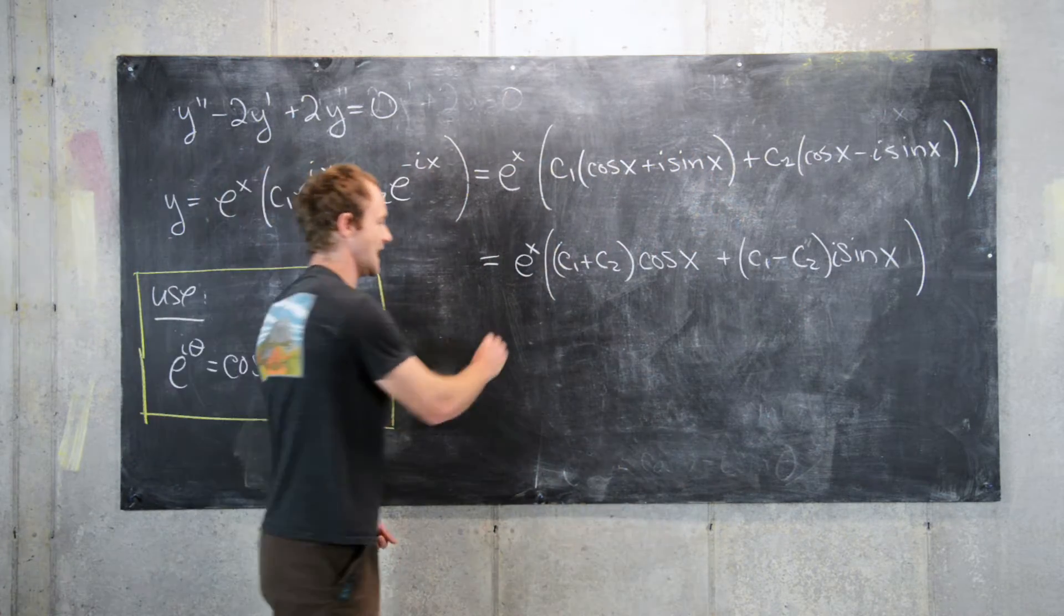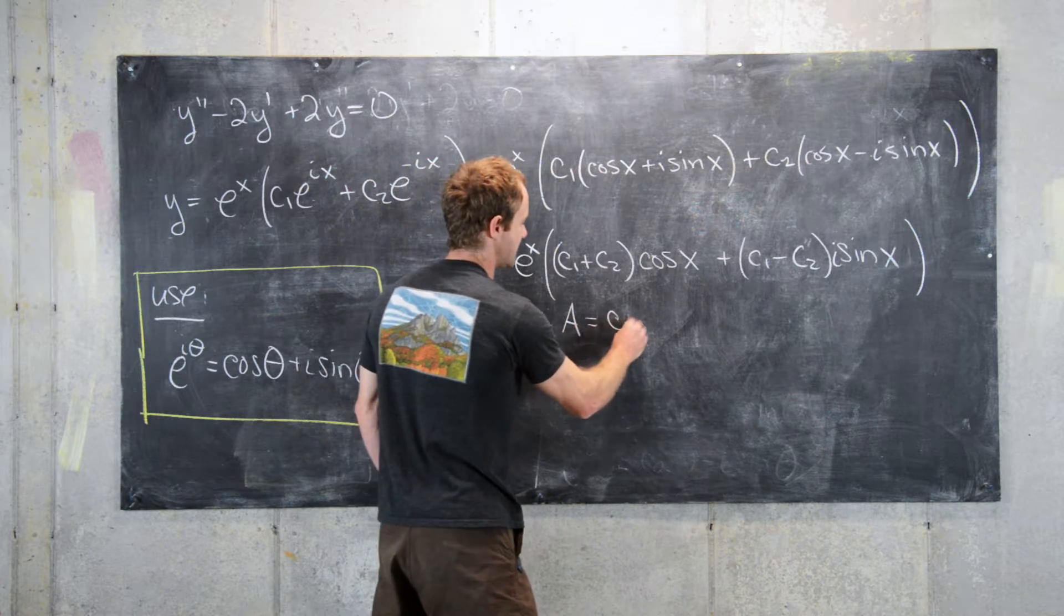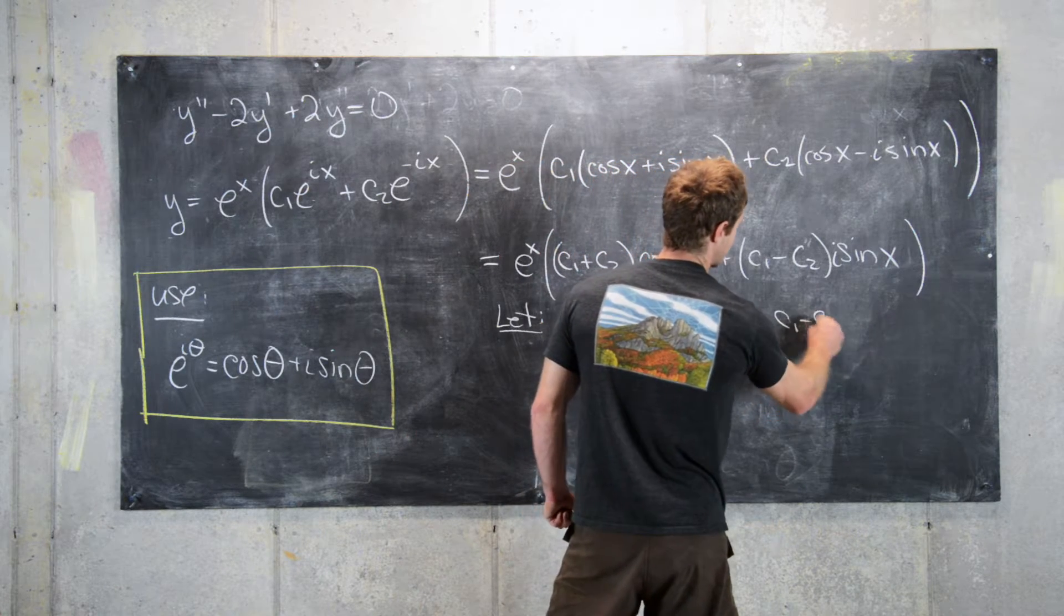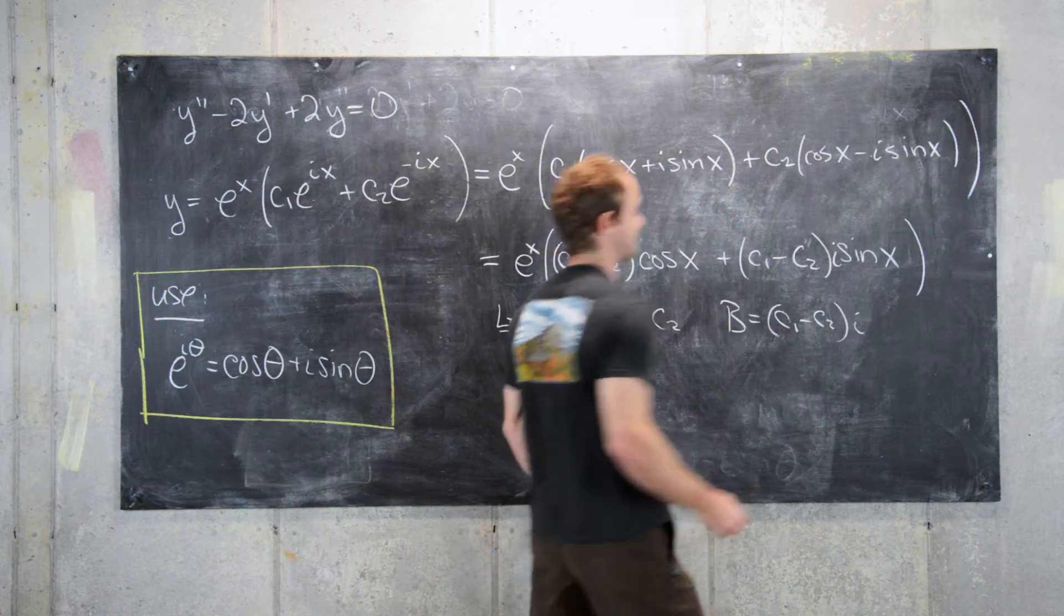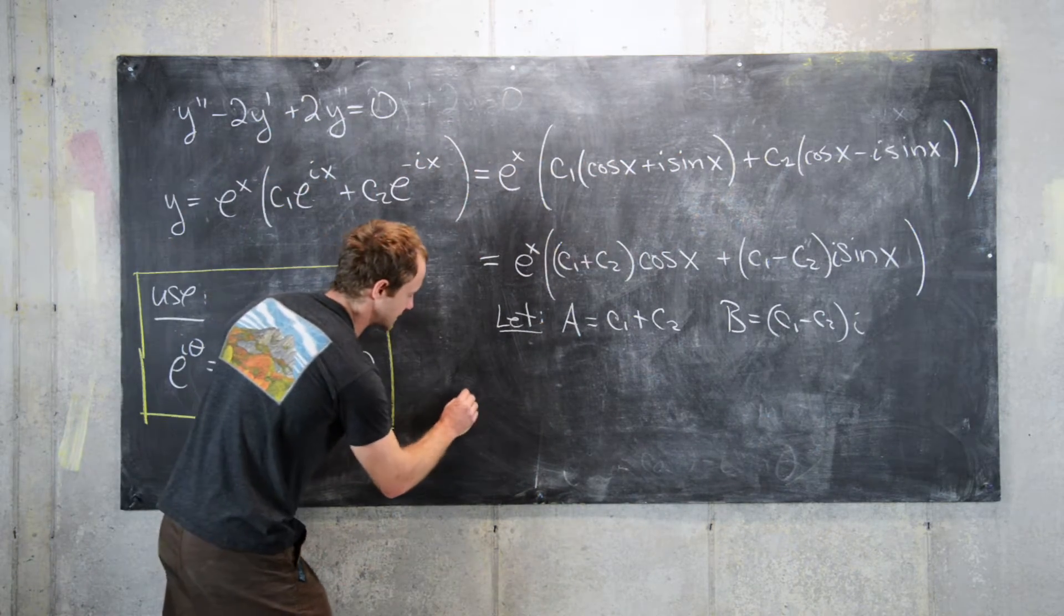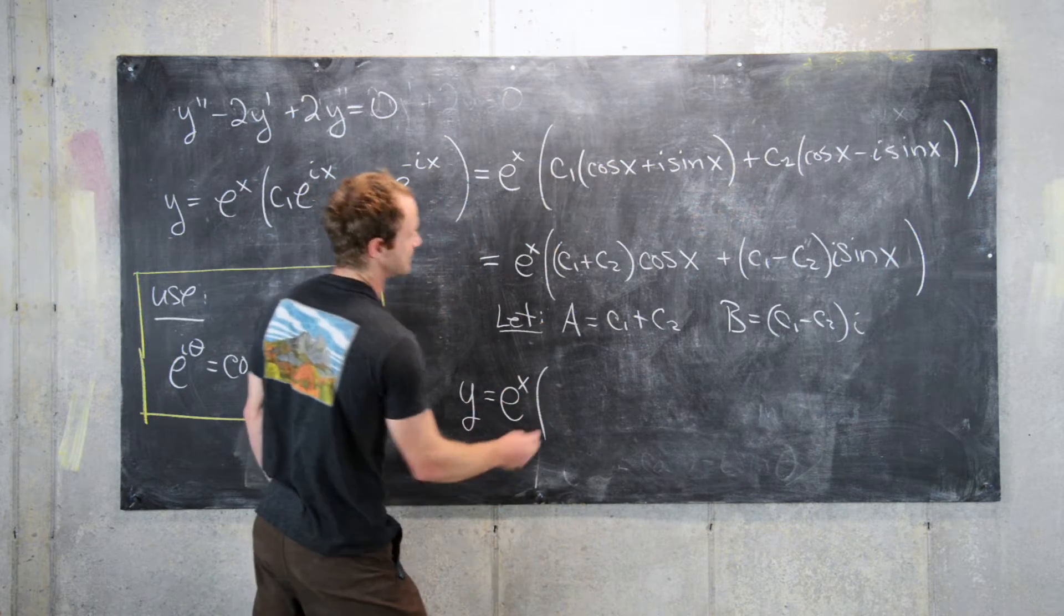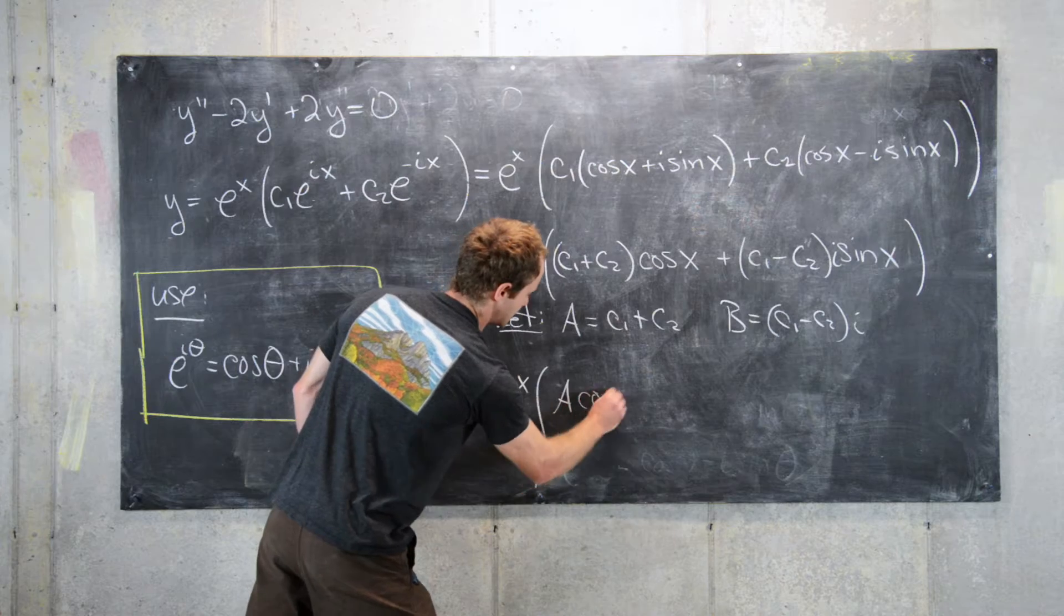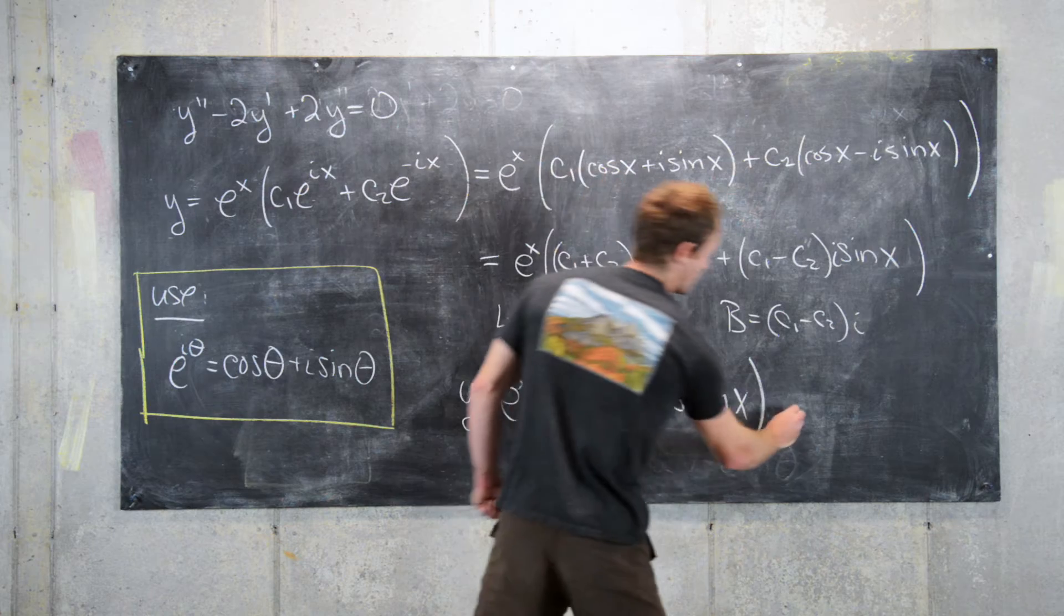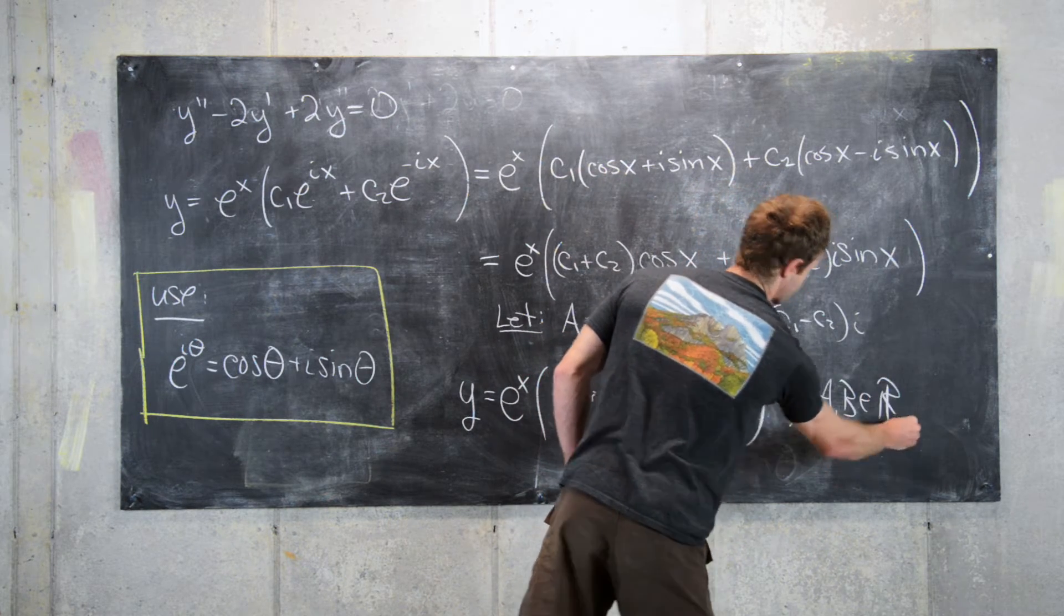And now what we can do is let capital A be c1 plus c2 and capital B be c1 minus c2 times i. And that allows us to write a general solution as follows. We have y equals e to the x and then A times cosine x plus capital B times sine x where A and B are real numbers.